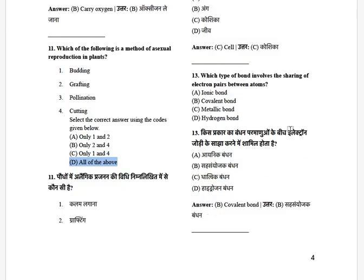Which type of bond involves the sharing of electron pairs between atoms? The options are: ionic bond, covalent bond, metallic bond, and hydrogen bond. The answer is covalent bond.